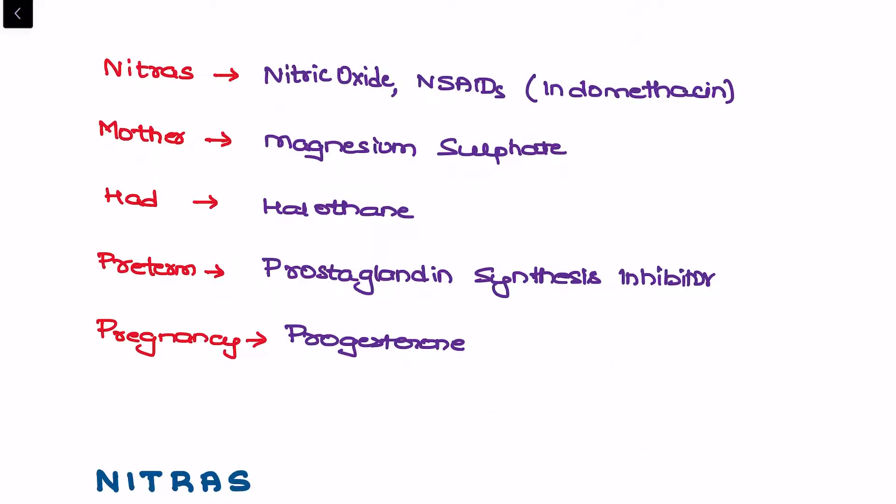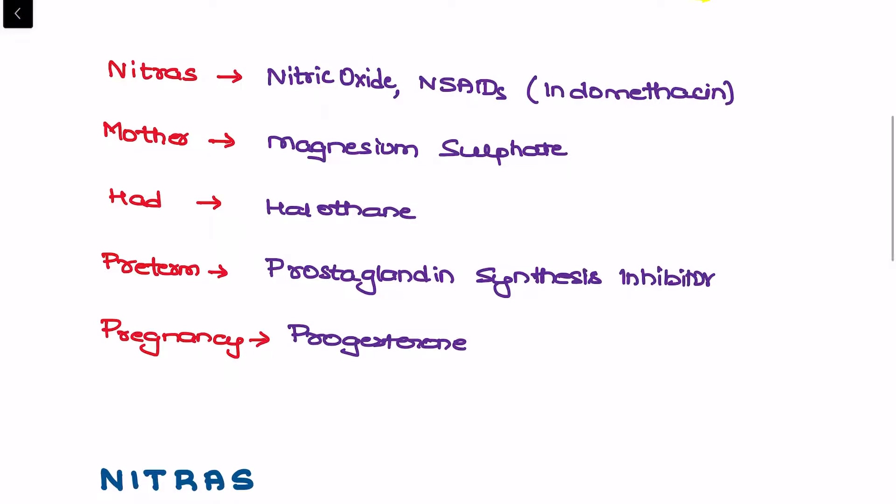Another way to remember the tocolytics used in premature labor prevention is Nitra's mother had preterm pregnancy. Nitra stands for N for nitric oxide, then non-steroidal anti-inflammatory drug indomethacin. M stands for magnesium sulfate. Had stands for halothane which is a general anesthetic. Preterm stands for prostaglandin synthesis inhibitor which is the non-steroidal anti-inflammatory drug indomethacin. Pregnancy stands for progesterone.